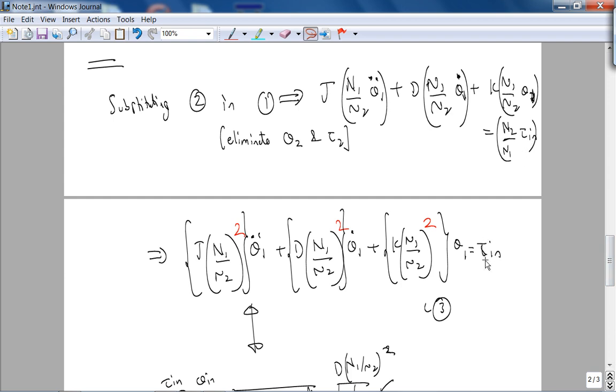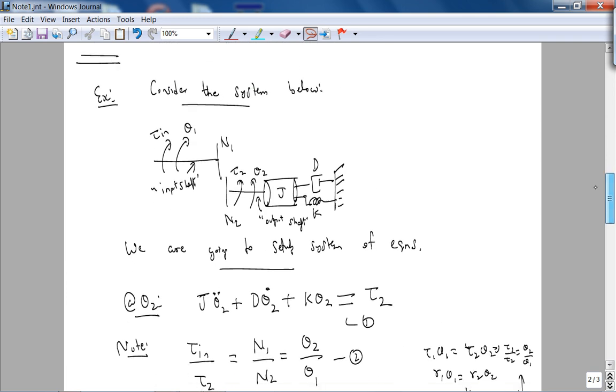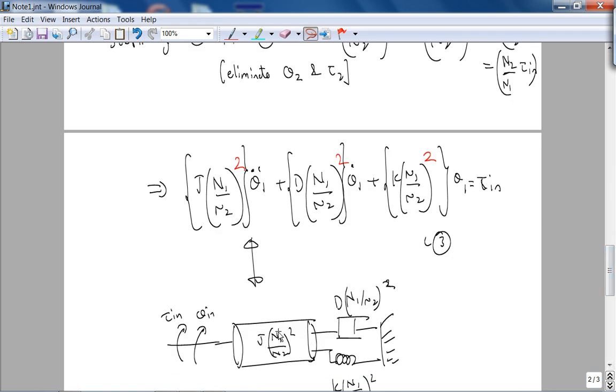The equivalent picture for equation 3 is basically these impedances being reflected back on the input shaft. You can see that you're getting the impedance times the number of teeth on the destination shaft divided by the number of teeth on the source shaft, squared. Likewise for these impedances.